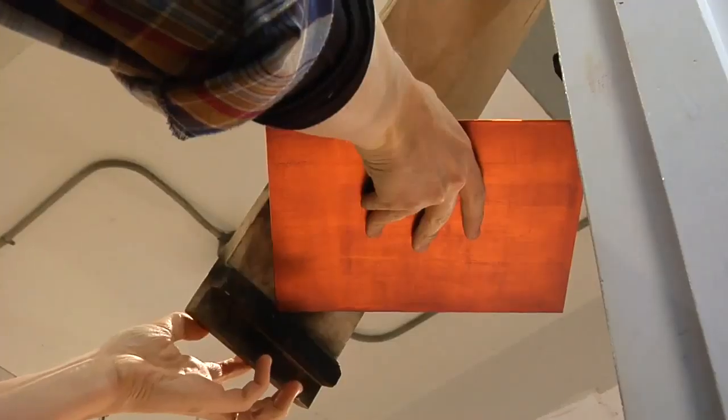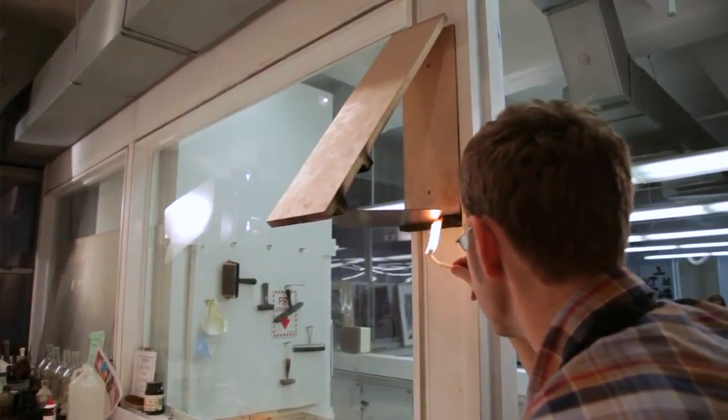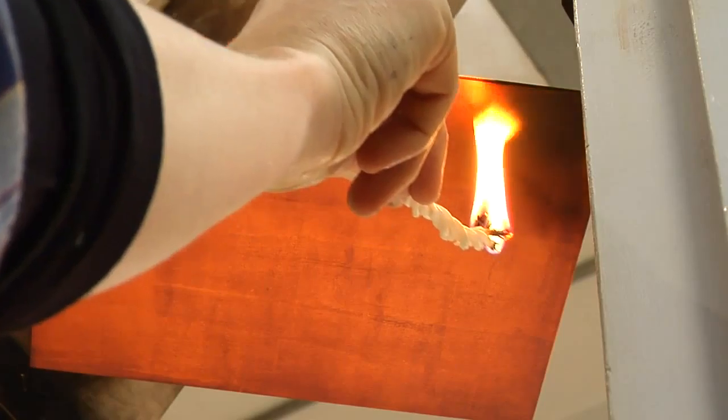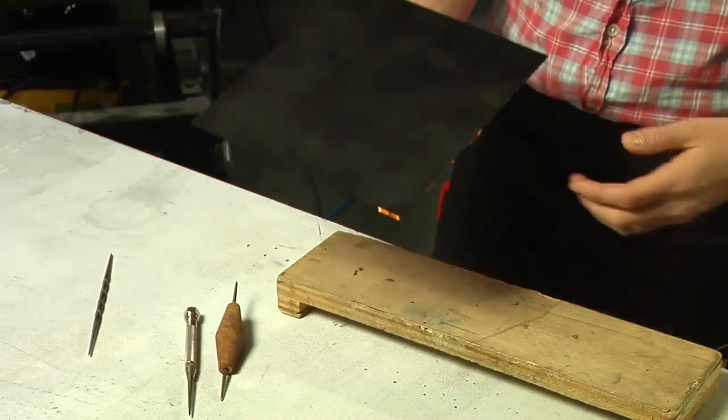To smoke the plate, the plate is held upside down so that the ground can be heated and absorb the soot. Once a plate has been prepared with a ground, the surface is a jet black.